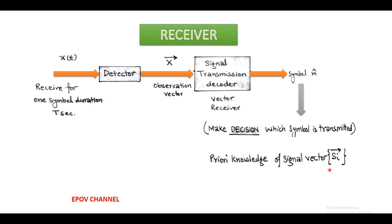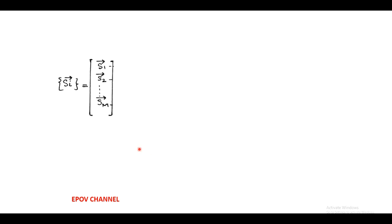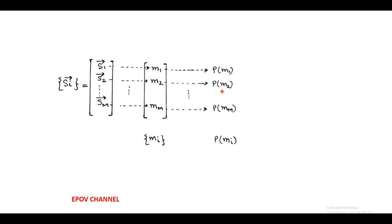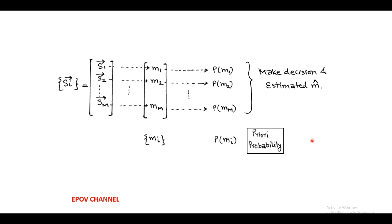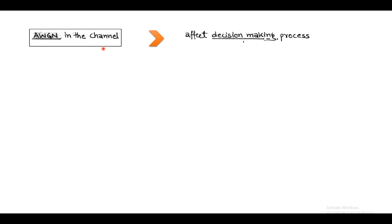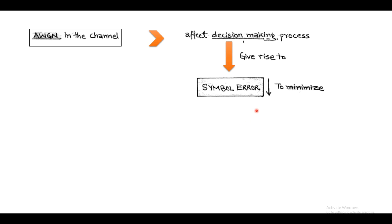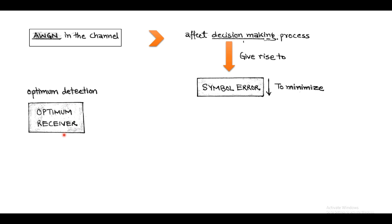The signal vector consists of the sequence s1 vector, s2 vector, up to s_M vector, corresponding to the individual message symbols m1, m2, up to m_M respectively. In order to make a decision, the a priori probability of the M-ary symbol enables the receiver to estimate the output symbol m-cap. However, during detection and estimation in digital communication systems, additive white Gaussian noise affects the decision-making process and gives rise to symbol errors. Our purpose is to minimize this type of symbol error, and for this we use an optimum detection process where an optimum receiver is used to minimize the average probability of symbol error.